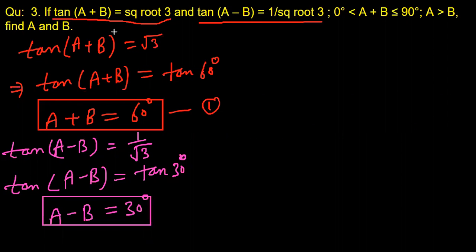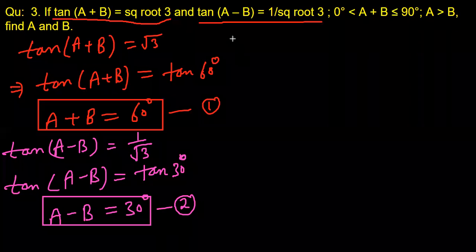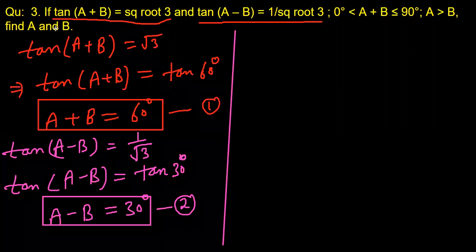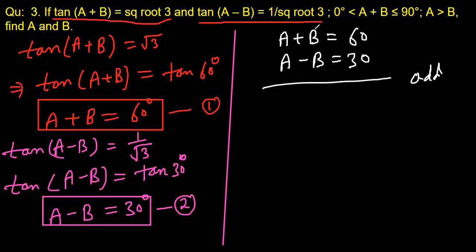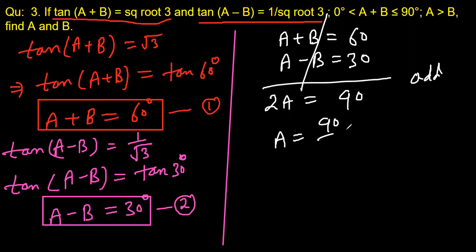Now we have simultaneous equations in two variables a and b. We can easily solve them. Writing them together: a+b = 60 and a-b = 30. Simply adding the two equations, b and b cancel, giving 2a = 90, so a = 45°.